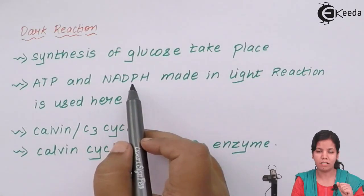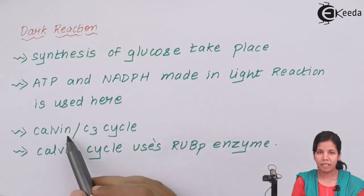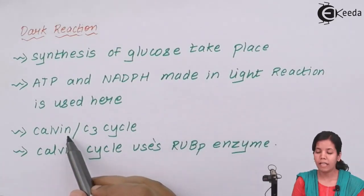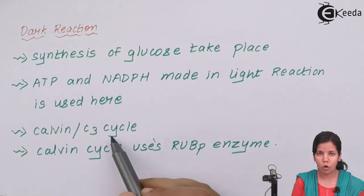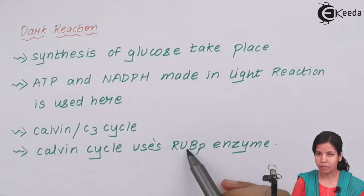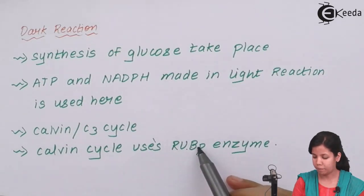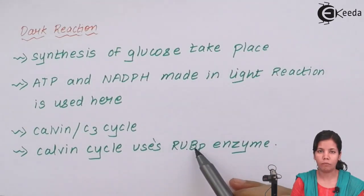The Calvin cycle is the cycle that takes place during the dark reaction. It is named after the scientist Calvin and is also called the C3 cycle. The Calvin cycle uses an enzyme called RuBP — ribulose bisphosphate — which forms the basis of the cycle.